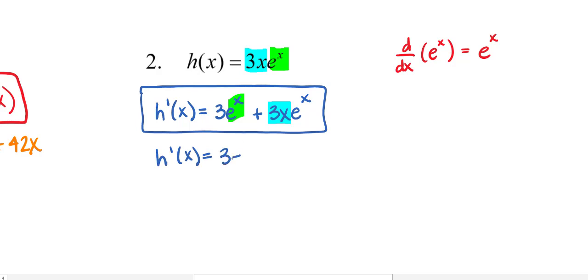One thing that I would highly recommend is think about if you were going to set this equal to zero and solve it, is this solve ready? And I would argue no, I think there's some factoring that you can do. So I'm going to factor out a 3e to the x as my GCF and then I have a 1 plus x left over. So this is where I'm going to actually recommend that you stop.